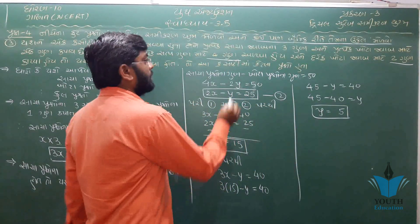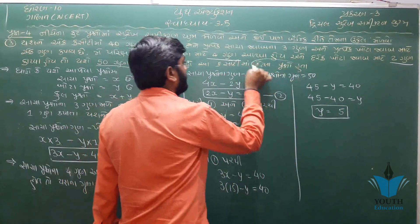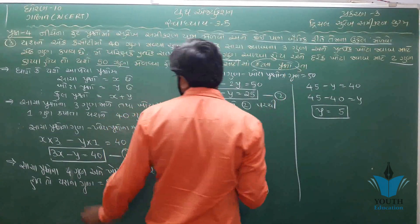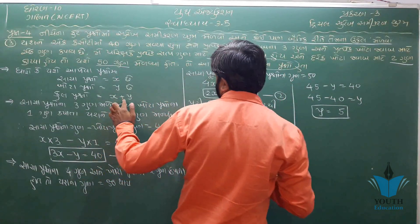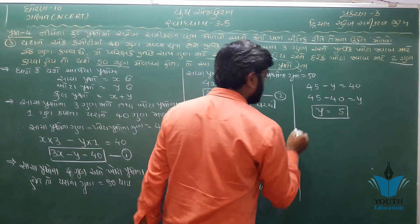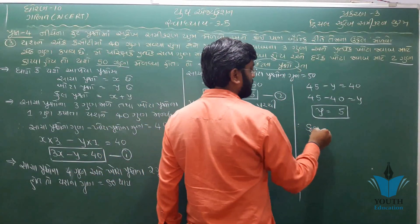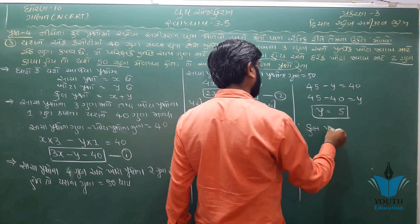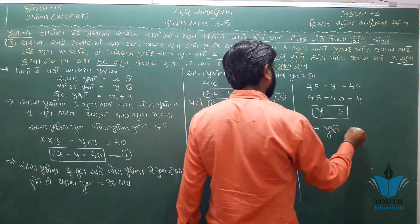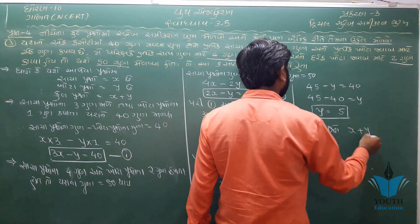આપણને પ્રશ્નો છે — કેટલા સાચા, કેટલા ખોટા — કૂલ પ્રશ્નો: x + y = 15 + 5 = 20. કૂલ પ્રશ્નો 20 થાય.